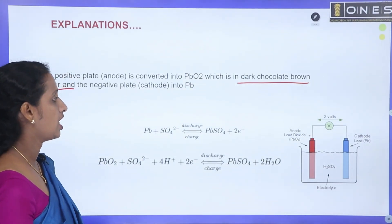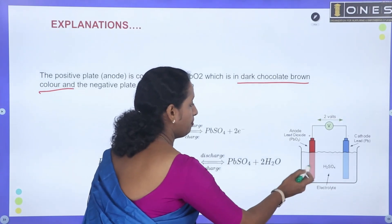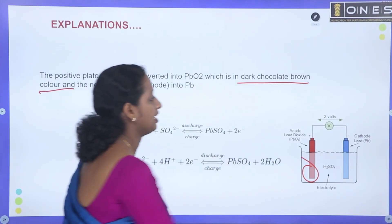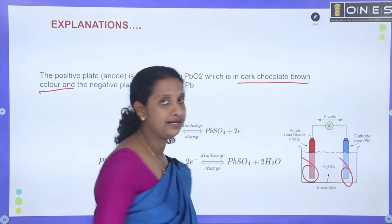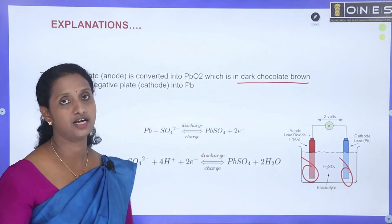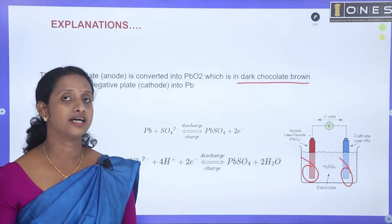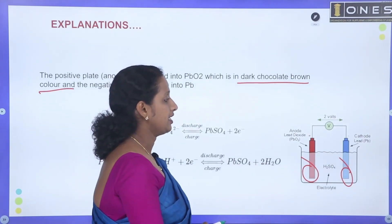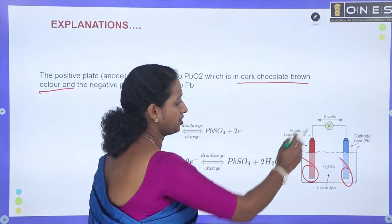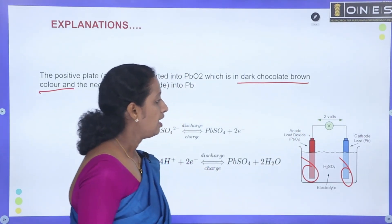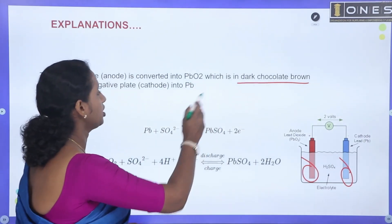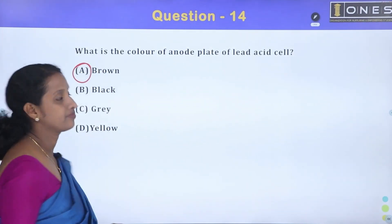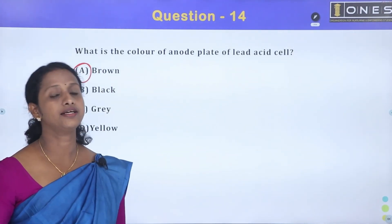At the time of charging, lead dioxide is depositing at the anode. The voltage is 2V. The color of the anode plate is dark chocolate brown. Option A is the correct answer.